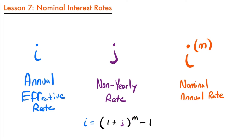That m is the same as this m. So what is the difference between a nominal annual rate and a non-yearly rate? Let's look at the wording for each type. The bottom line is that a nominal annual rate is just the interest rate as stated without adjustment for the full effect of compounding.